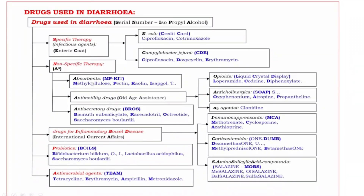Next, Antimotility Drugs are further subdivided into O-A-A: O for Opioids, A for Anticholinergics, one more A for Alpha-2 Agonists. Opioids mnemonic is L-C-D: L for Loperamide, C for Codeine, D for Diphenoxylate.